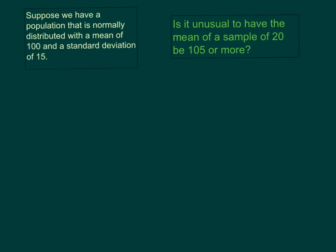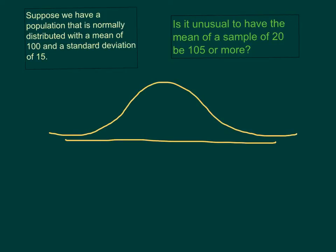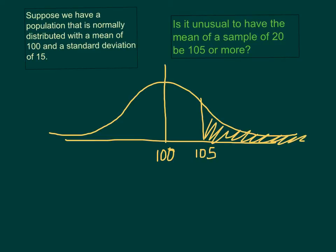So let's calculate that using the same method. Let's start out by sketching our curve — that's always the first step. Let's sketch the curve and draw out where everything is located. First, place your mean in the center at 100. Where would our 105 be? It's going to be here to the right at 105. We want to know if it's going to be unusual to be over here, so before we can look it up on the table we need to convert to our z-score again.